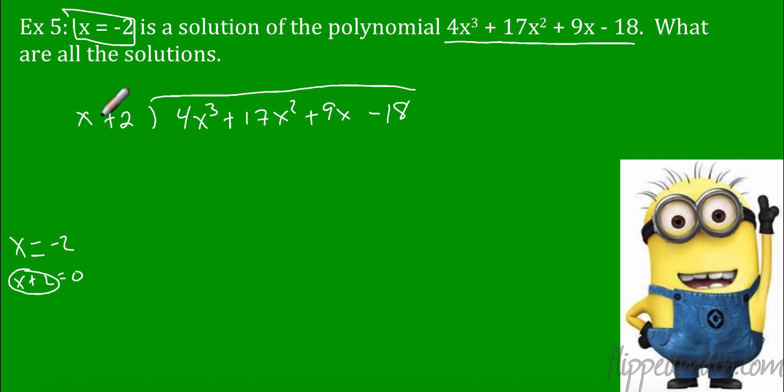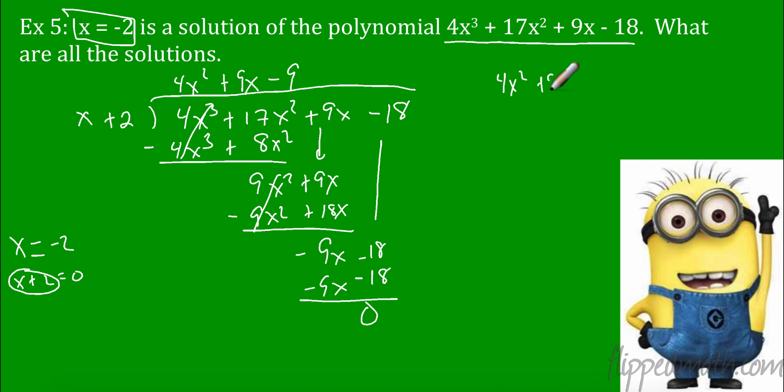So what do I have to multiply x by to get 4x to the third? 4x squared. That would be 4x to the third. 4 times 2 is 8x squared. And remember, we subtract down. So that's gone. This gives me 9x squared. Bring this next one down, plus 9x. What do I have to multiply x to get 9x squared? That would be 9x. 9x squared plus 18x. Remember, I subtract, so that's canceled. This is going to be a negative 9x. Bring that down, minus 18. What do I have to multiply x by? That's going to be a negative 9. So that would be negative 9x. Negative 9 times 2 is negative 18. And subtract them. Those cancel out.